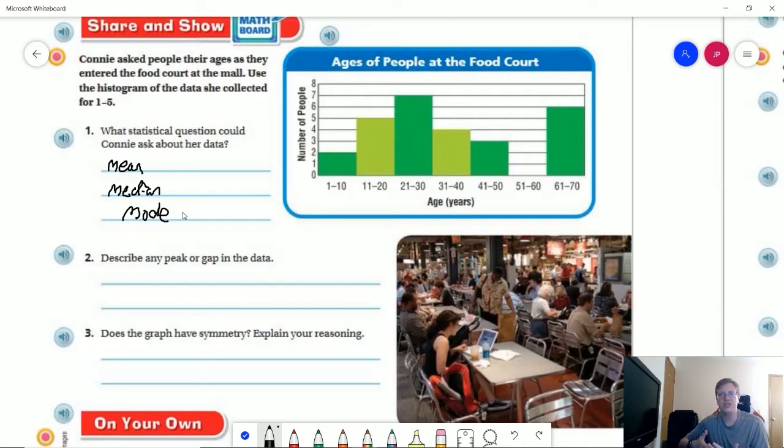Which age group was most frequently represented at the food court? We could ask the median and the mean in a similar way. We could ask what the average age of person at the food court might be. We could possibly find that by doing the mean or the median.